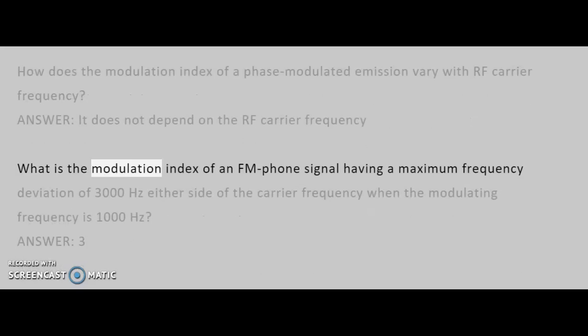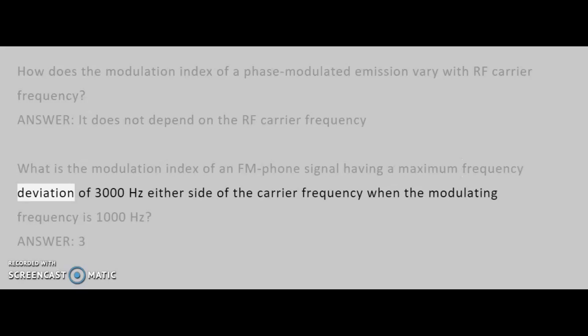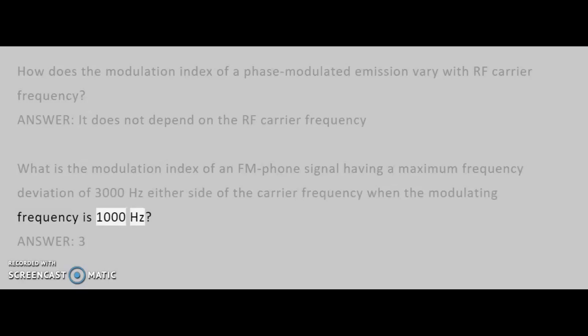What is the modulation index of an FM phone signal having a maximum frequency deviation of 3000 Hz either side of the carrier frequency when the modulating frequency is 1000 Hz? Answer: 3.